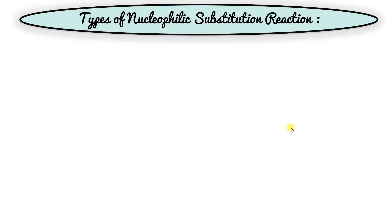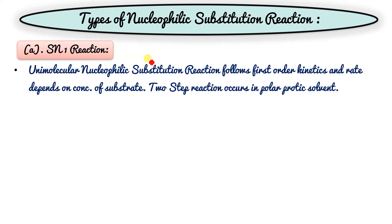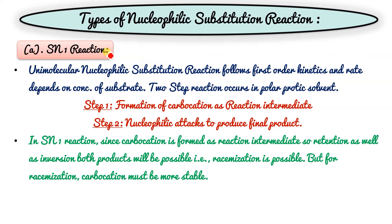Types of nucleophilic substitution reaction — also known as SN reaction. S for substitution and N for nucleophilic. This is of two types: SN1 reaction and SN2 reaction. SN1 reaction is unimolecular — '1' means first order reaction and unimolecular.